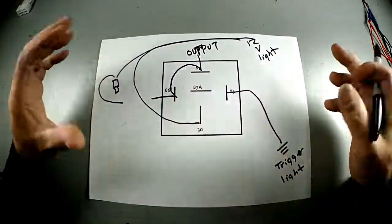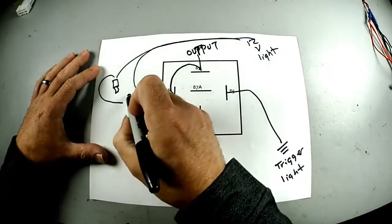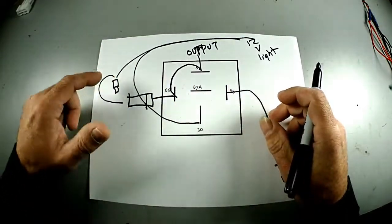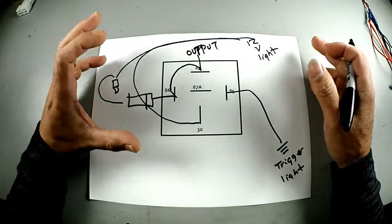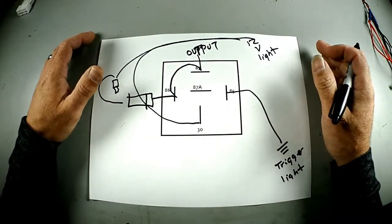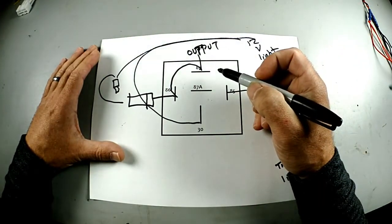We're going to add a diode right here so it can't back-feed to the switch. Normally this wouldn't matter in something like this, but in some circuits it does - I'll explain that in a future video.